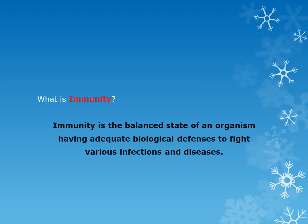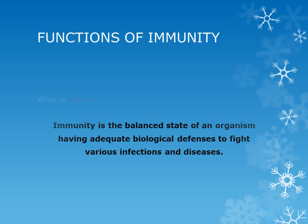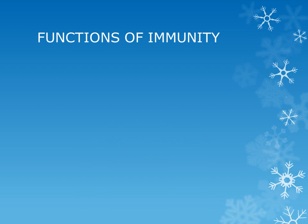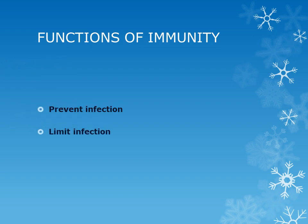What are the functions of immunity? There are two important functions. Number one: it prevents infection — it gives protection against various infections. Number two: if a person does get an infection, it will limit the spread of that infection, whether it is fungal, parasitic, or bacterial. These are the two important functions of immunity.